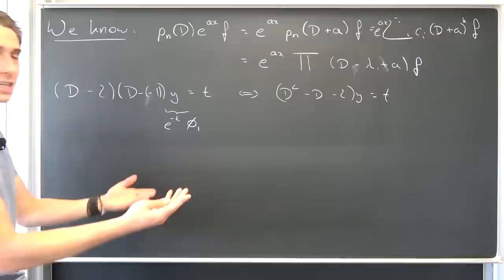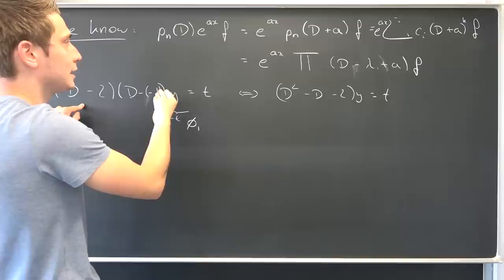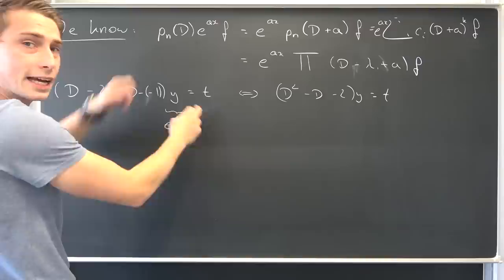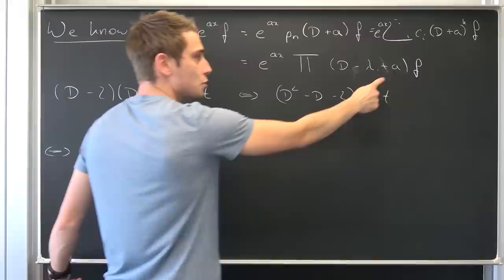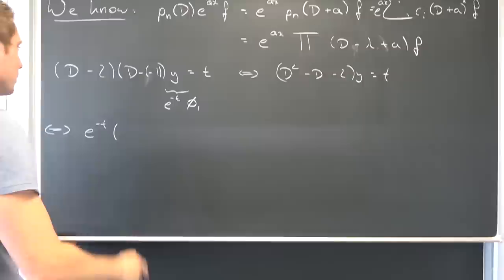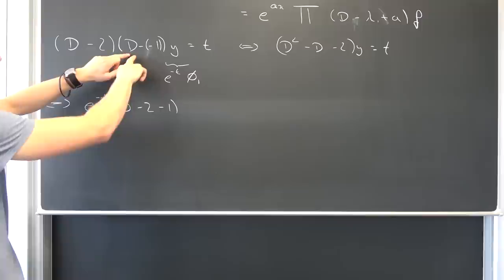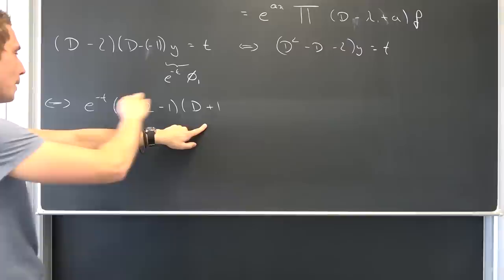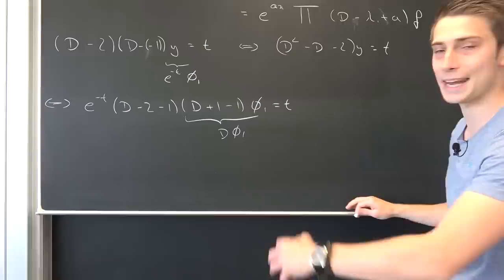Now we make use of our exponential shift theorem. Bringing e to the negative t to the outside, we distribute this factor into all of the linear factors, leaving us with: e to the negative t times (d minus 2 minus 1) times (d plus 1 minus 1) times phi one equals t. This simplifies to e to the negative t times (d minus 3) times d phi one equals t. This is pure magic — this overall is just a differential of phi one.